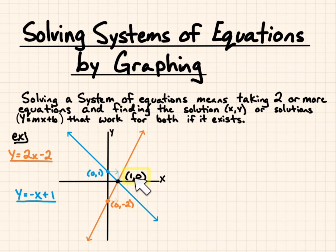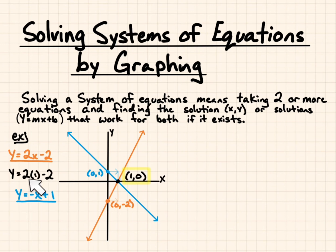That's our solution. That means x equals 1, y equals 0 works for both equations. Let's try it out. If I replace x with 1 in the first equation: 2 times 1 is 2, and 2 minus 2 gives me 0 — that works. For our second equation, if I replace x with 1, I get negative 1 plus 1, which is 0. So it works for both equations.